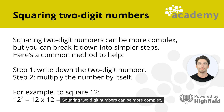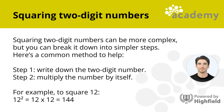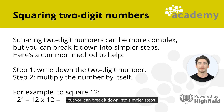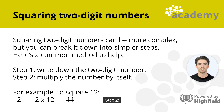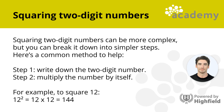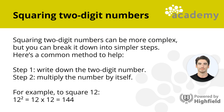Squaring two-digit numbers can be more complex, but you can break it down into simpler steps. Here's a common method to help. Step 1: write down the two-digit number. Step 2: multiply the number by itself. For example, to square 12, 12 squared is the same as 12 multiplied by 12, which equals 144.